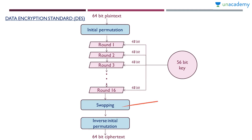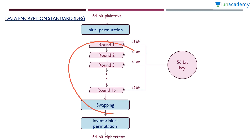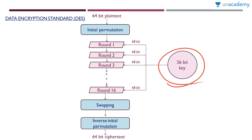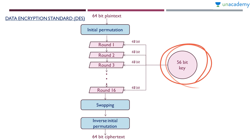To decrypt, we need to do the reverse operation. We give the 64 bit ciphertext to the inverse initial permutation, then swapping happens, then 16 rounds are done, and then again a permutation gives us 64 bit plaintext. There is a 56 bit key and a round key generator producing 48 bit keys for each round, so we need 16 48-bit keys.